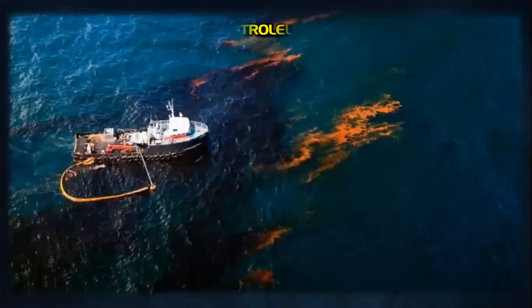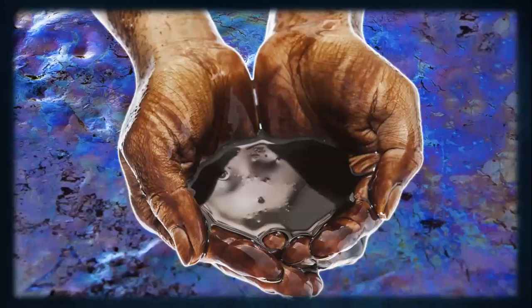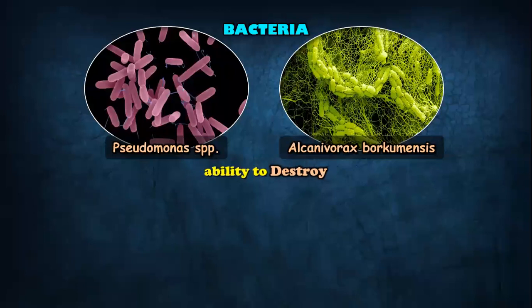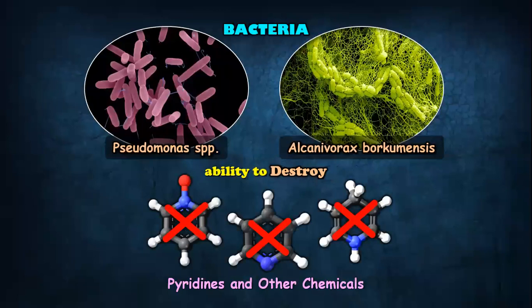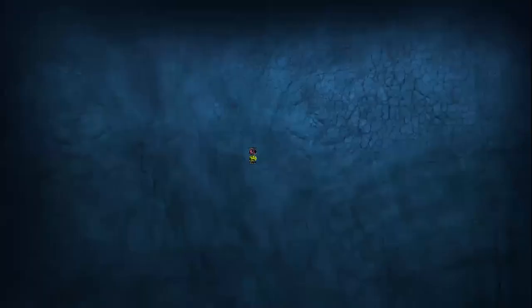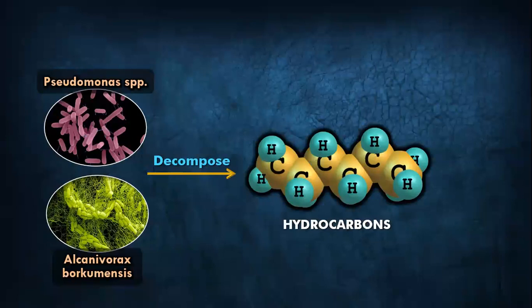Spilling of petroleum oil in the ocean can cause a lot of harm. Instead of removing it by mechanical methods, we can use two bacteria — Pseudomonas species and Alcanivorax borkumensis — which can break the pyridines from these chemicals and therefore clear an oil spill. What they do is decompose the hydrocarbons, therefore they are called hydrocarbonoclastic bacteria, and they can produce carbon dioxide and water from it.